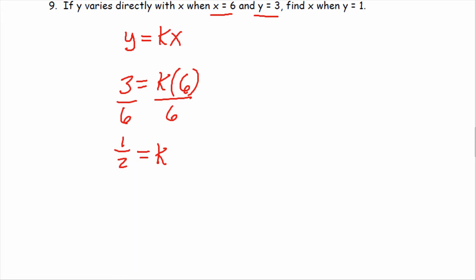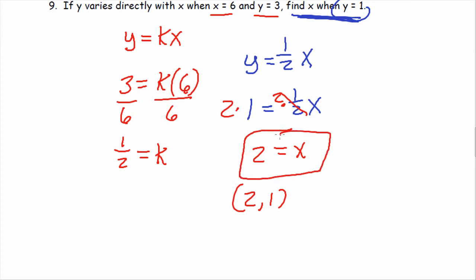Now, we can write our direct variation equation, which would be y equals kx. k is one-half, so y equals one-half x. Once we know that, then we use this second statement to figure out our answer. It says find x when y is one. Fill in what we know. We know y is one, so one equals one-half x. We can multiply by two. That will cancel, and we get x equals two. So, when y is one, x is two.